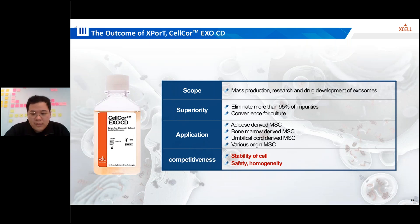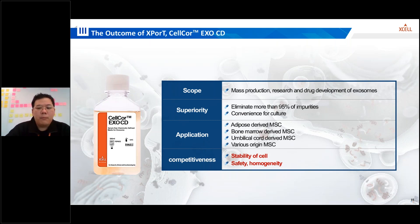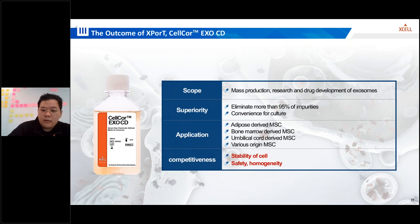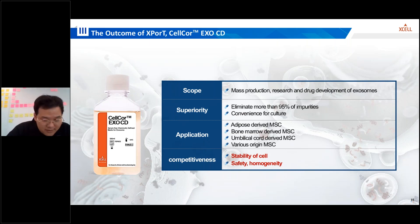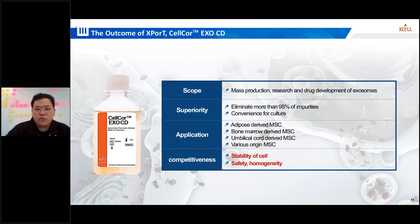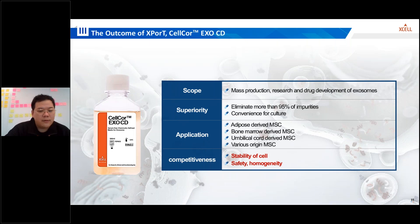Second, Celcar MSC CDAOF offers convenience in culture, allowing for ease of use and a simplified workflow. This media can be applied to various sources of mesenchymal stem cells including adipose, bone marrow, umbilical cord blood, Wharton's jelly, and so on. The key advantage of this cell culture medium lies in its stability, safety, and homogeneity. It promotes stable cell growth and proliferation, leading to a consistent and reliable supply of exosomes for research and therapeutic purposes.